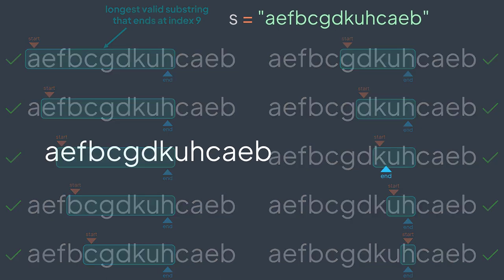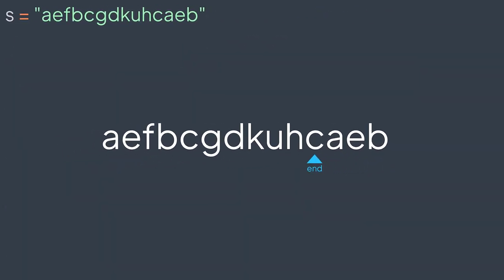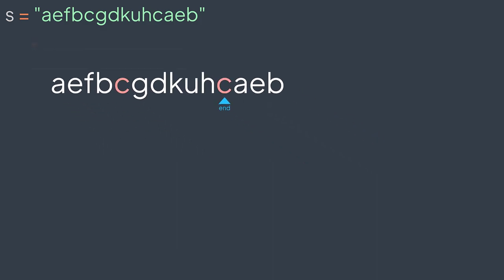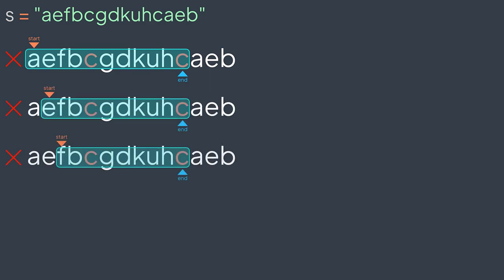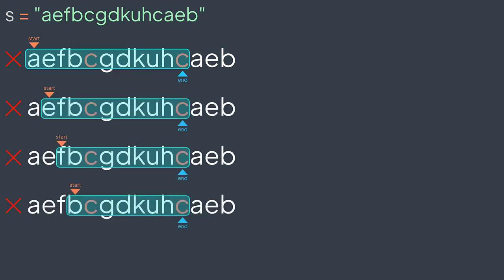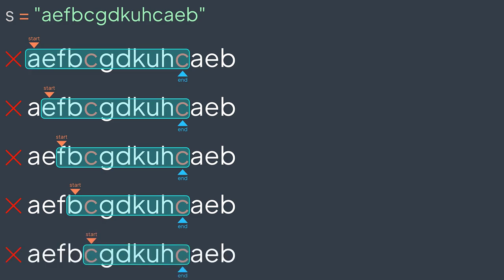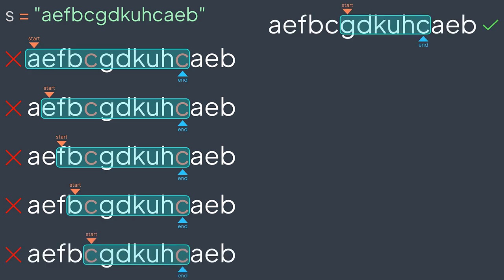Now we move end to index 10. Here things are different because the character at index 10 is repeated before. Starting traversing start indexes: index zero — the substring from zero to 10 has repeating characters; index one, same thing; two, same; three, also repeating characters; four, same. Then index five — here we have no repeating characters, we found a valid substring of length six.